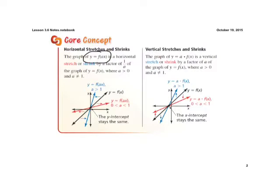Moving to vertical stretches and shrinks: if we have a number being multiplied to our whole function, it's a vertical stretch or shrink. On these, the x-intercept stays the same. If the number being multiplied is greater than 1, we have a vertical stretch — it stretches away from the x-axis. If it's between 0 and 1, we have a vertical shrink, which means it shrinks towards our x-axis.